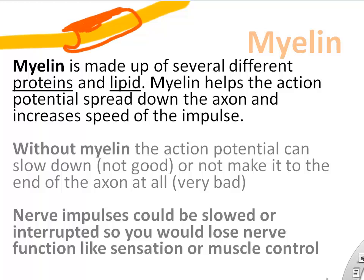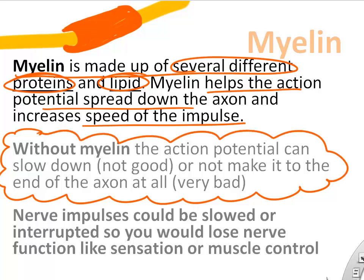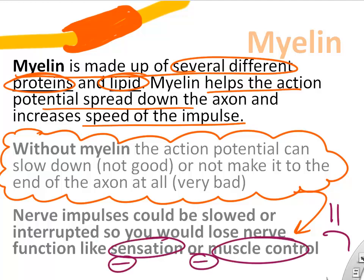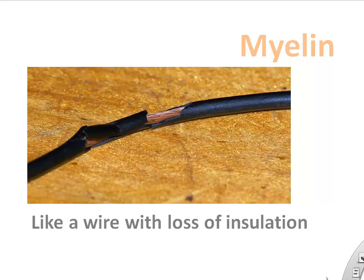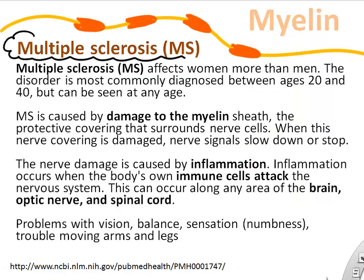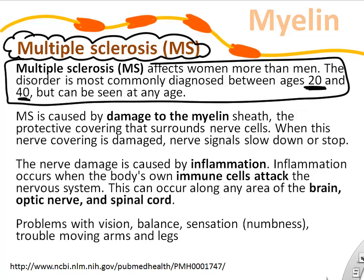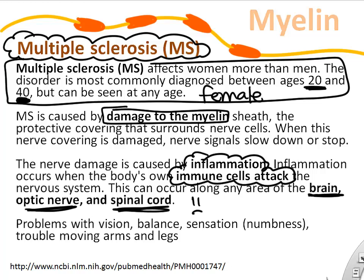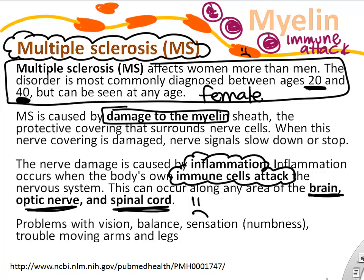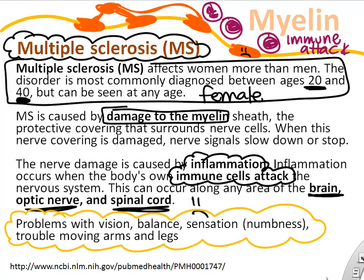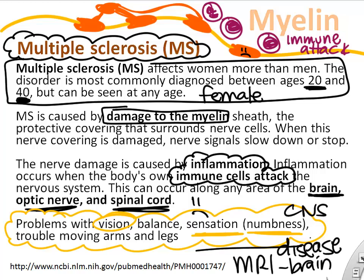Myelin is a substance made of several proteins and lipid that wraps the axon and improves the speed of action potentials. Loss of myelin leads to disruption of neuron function and problems sending action potentials. One of the most famous diseases of myelin loss is multiple sclerosis, which affects both males and females but more commonly females between ages 20 to 40. It's thought that immune cells attack our own myelin, destroying it and reducing the ability of central nervous system neurons to work — symptoms can include numbness, vision loss, and trouble walking.